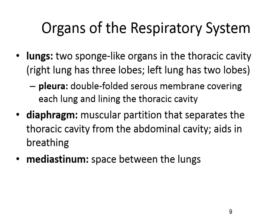The lungs are two spongy organs. The right lung has three lobes; the left lung has only two, leaving space for the heart. The pleura is the outer membranous sac lining the thoracic cavity where the lungs reside. The diaphragm is a muscular sheet separating the thoracic and abdominal cavities — it moves down when you inhale and up when you exhale. The mediastinum is the space between the two lungs.